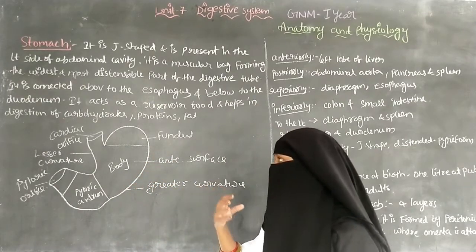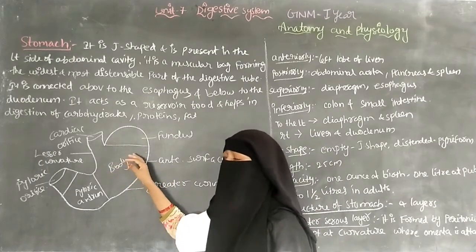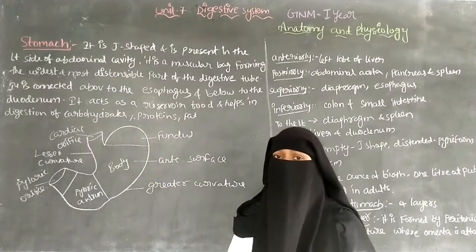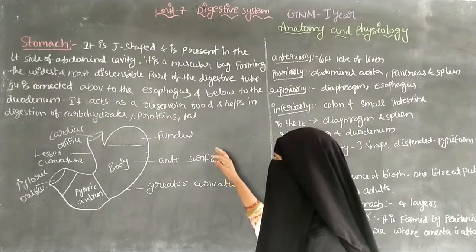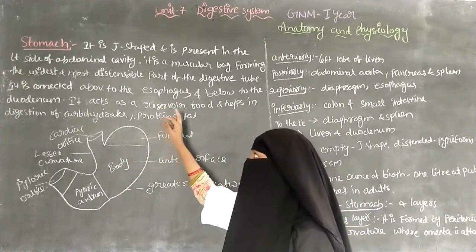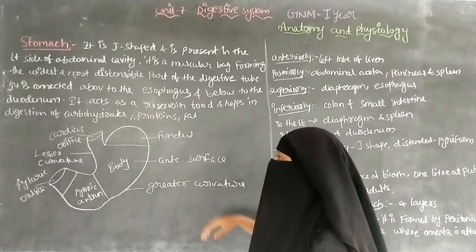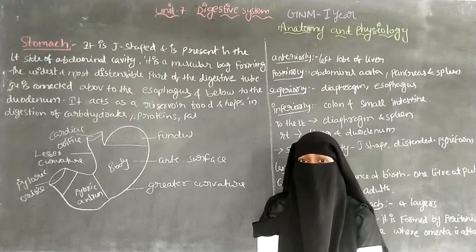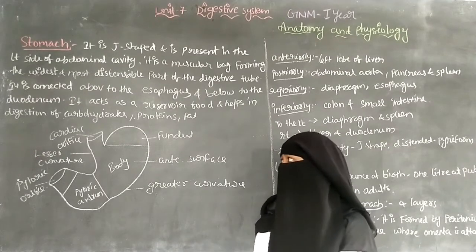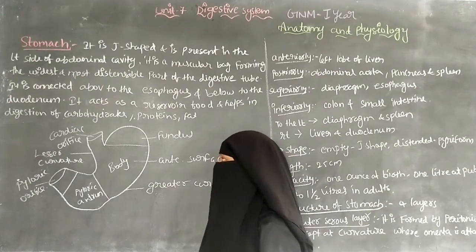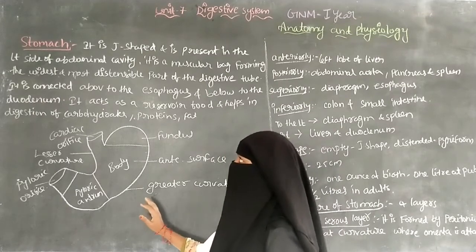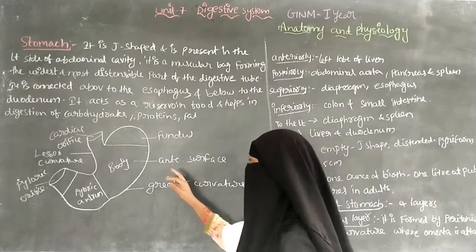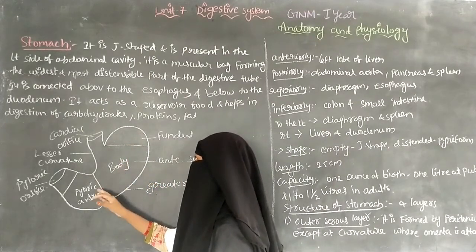After taking food, the food is digested in the stomach. The stomach holds the food for digestion, which is why it is called a reservoir of food. It helps in the digestion of carbohydrates, fats, and proteins. The stomach is J-shaped.